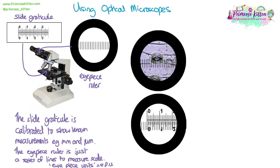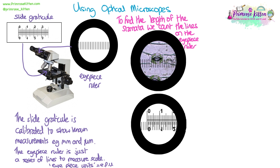Let's look at an example of how to use the eyepiece ruler and slide graticule to measure a stomata. Using the eyepiece ruler aligned over the stomata, I count the number of eyepiece units that make up the length: one, two, three, four, five, six, seven — so it's seven eyepiece units.